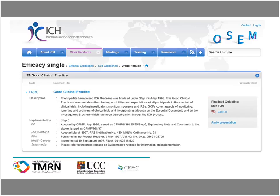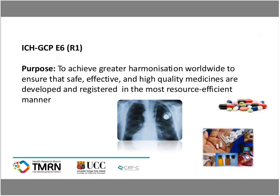Anyone who's worked in clinical trials will be familiar with the ICH GCP guidelines. They were published in 1996 and are essentially an international codebook for clinical trial conduct — they set out exactly what should be done when conducting a clinical trial. The main purpose of these guidelines was to achieve greater harmonization worldwide to ensure that safe, effective, and high quality medicines were developed and registered in a very resource-efficient manner. They are really just a global standard of how we should conduct our clinical trials.